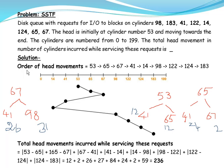First we have to write down the order of head movements. We start from 53 as the head is initially at 53. We check which request is closest to 53 — we find the closest at the left side and the closest at the right side. Here, 41 is the closest on the left side and 65 is the closest on the right side. The difference between 53 and 41 is 12, and the difference between 53 and 65 is also 12.